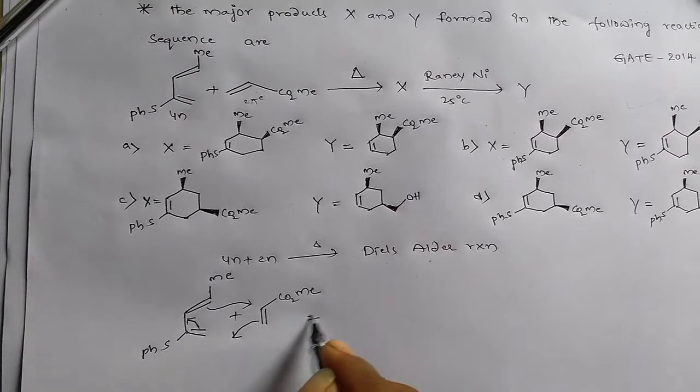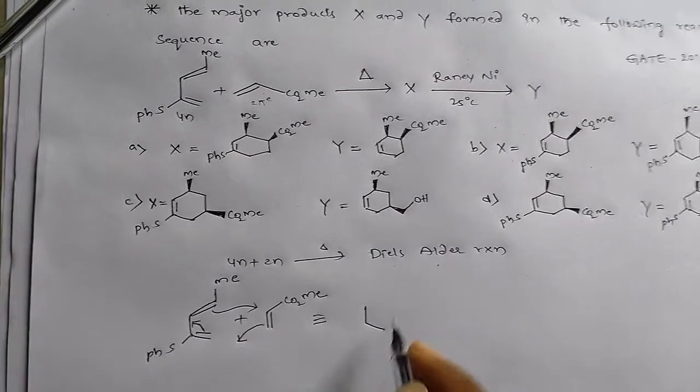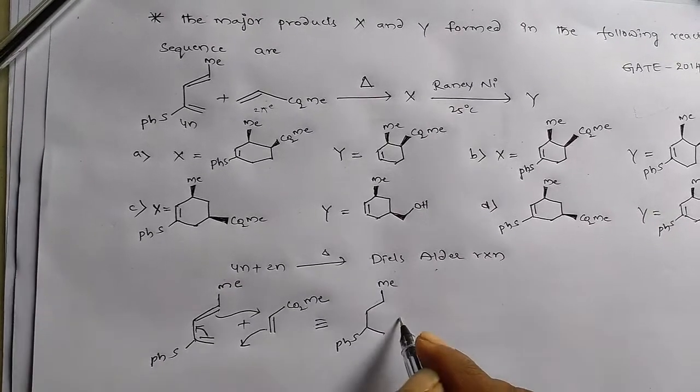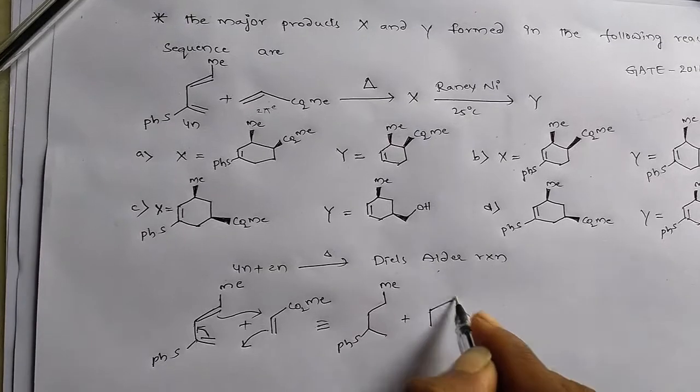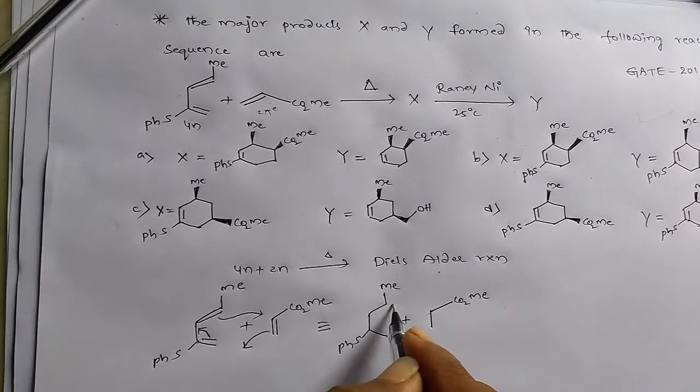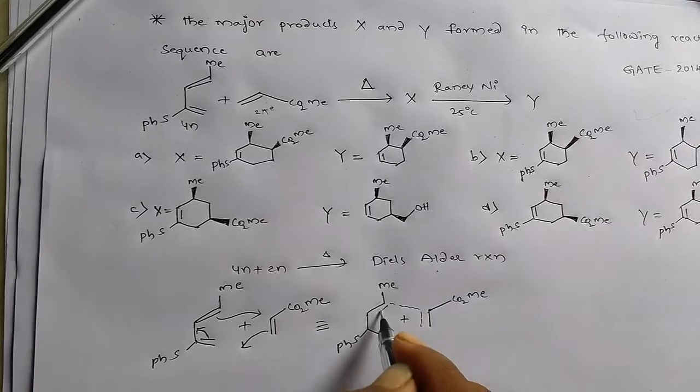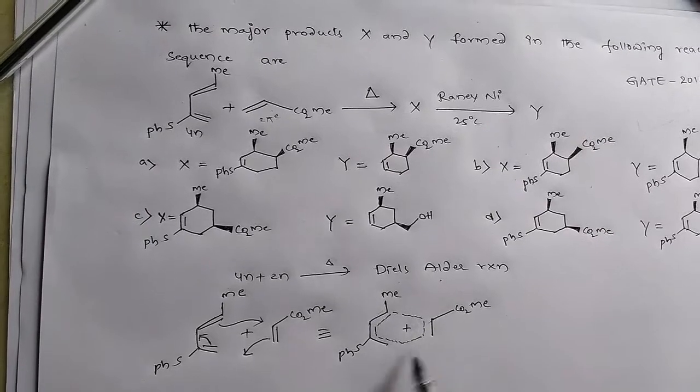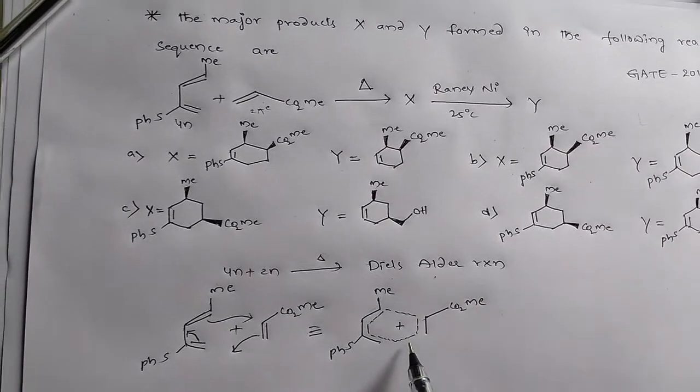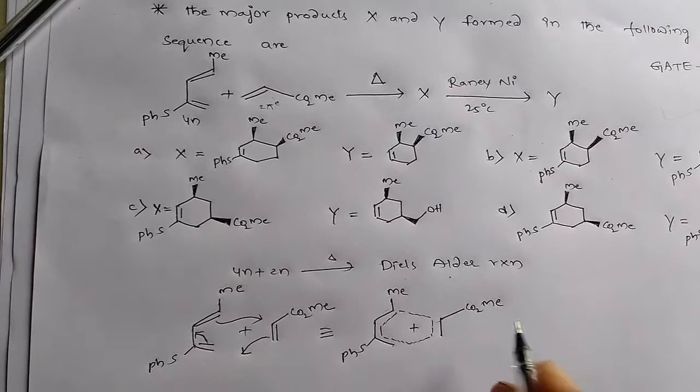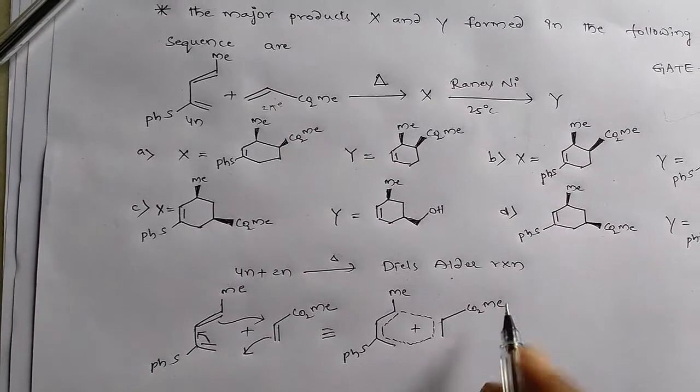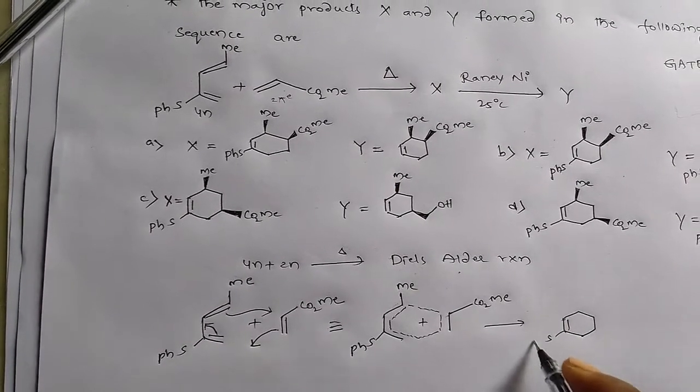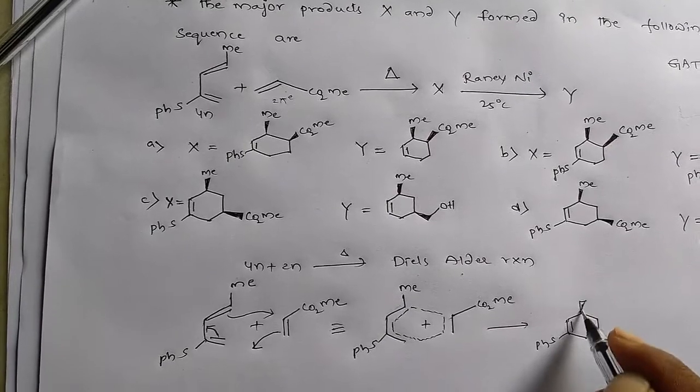There is simply electron transfer through the 6 electronic system. So we have this as like this, 6 electronic transition state. This is simply through the concerted mechanism and we can get this as the product.